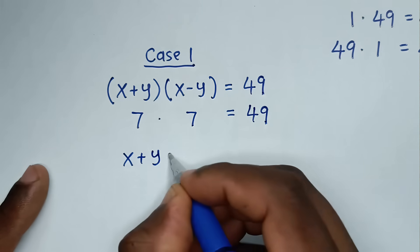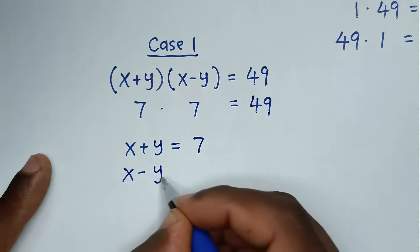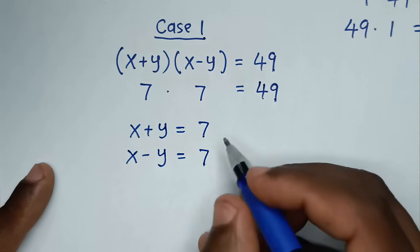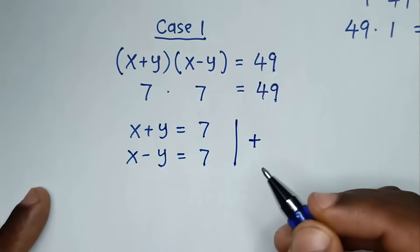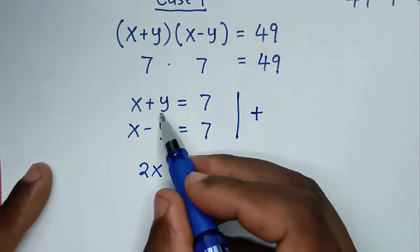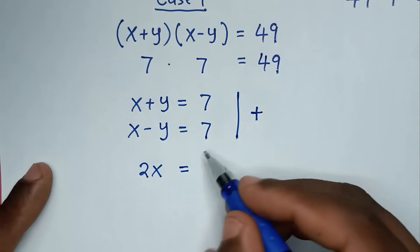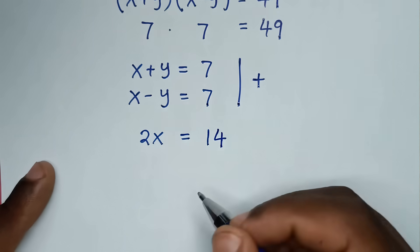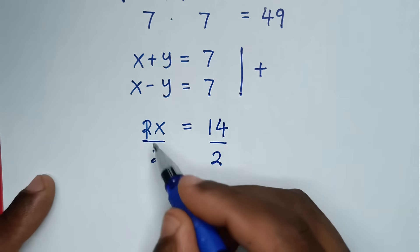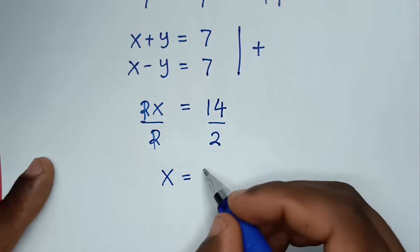We have x + y = 7 and x - y = 7. We will add these two equations by the elimination method. So x plus x is 2x, y plus negative y is 0, equal to 7 plus 7, which is 14. Then to get x, we divide by 2 on both sides, and this gives x = 14 divided by 2, which is 7.